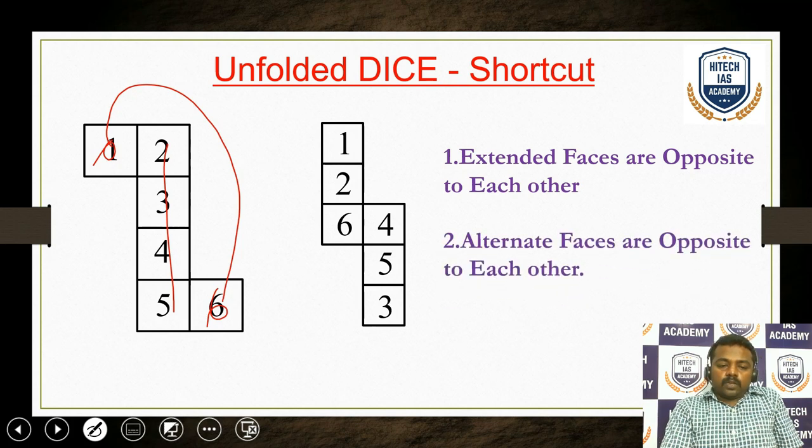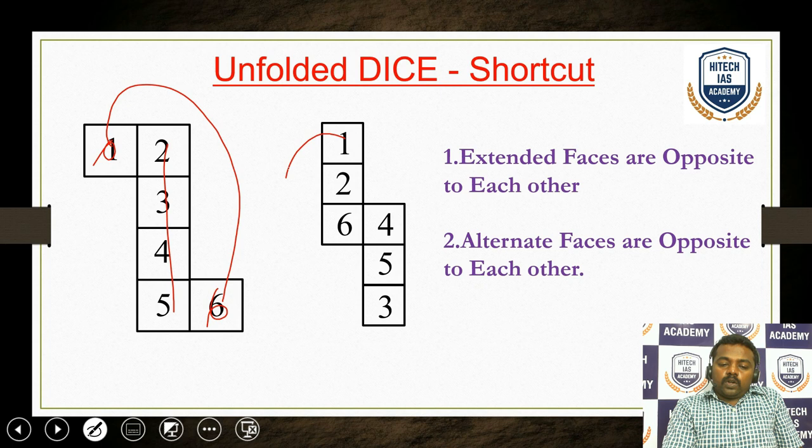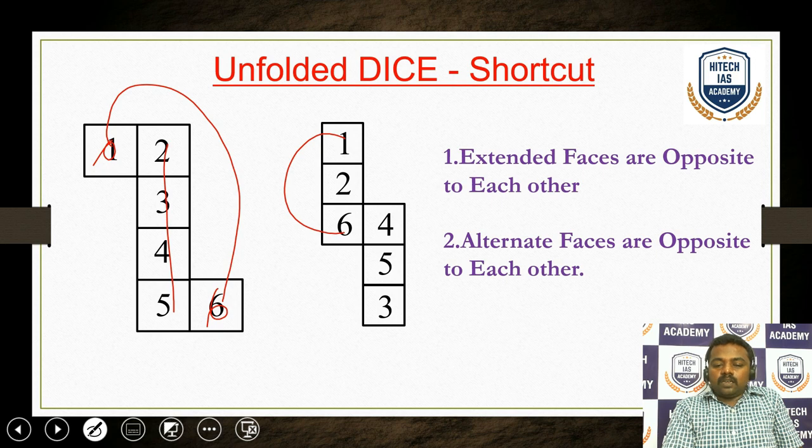The second shortcut: alternate faces. For example, 1 and 6, which are alternate faces. These two are opposite to each other.